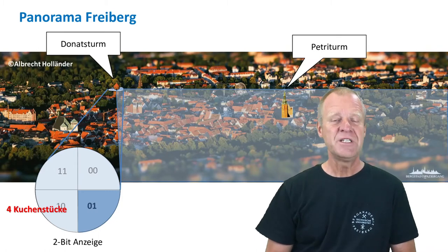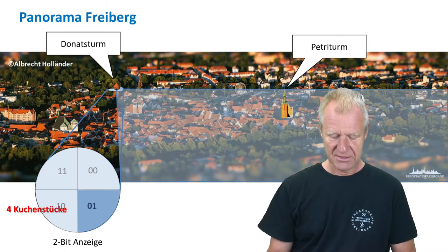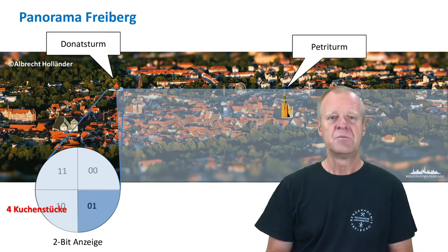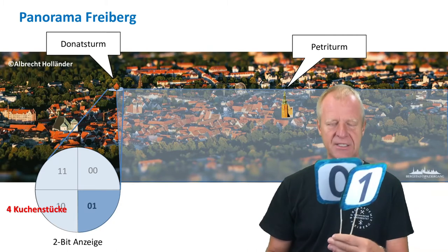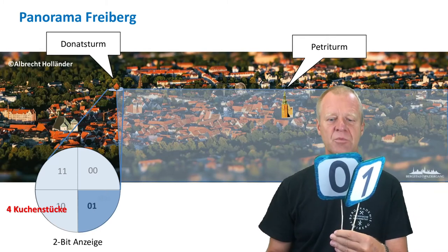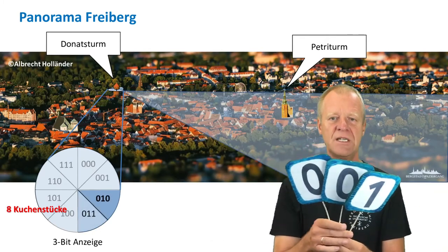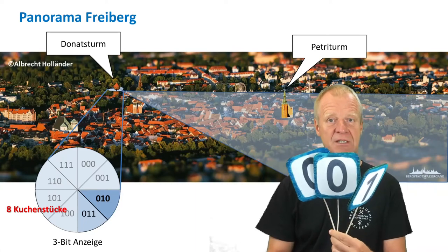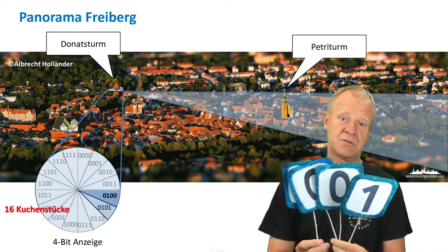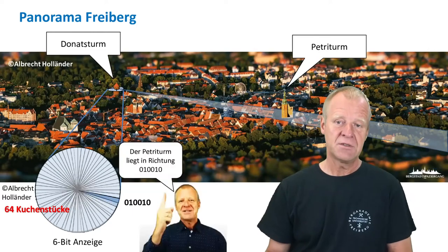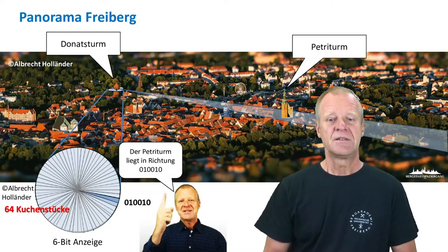So we have represented the azimuth of the Petri Tower as a digital code. But this sector is too big — it contains almost the entire tower of Freyberg. So we have to specify the azimuth a bit more precisely. Since two bits are not enough, let's divide each piece of the cake into two halves. Now we have three bits to give each piece a different name, and we see that the specification of the azimuth has become more precise. So we continue splitting the cake more and more by using more bits.